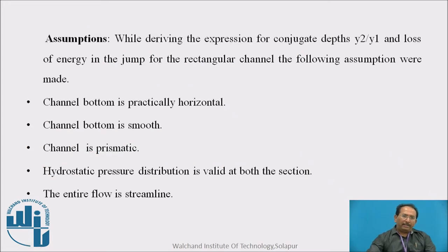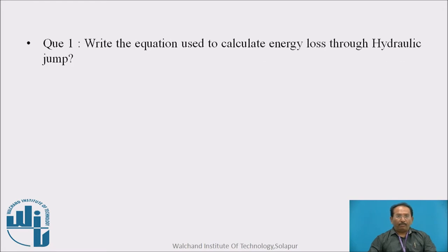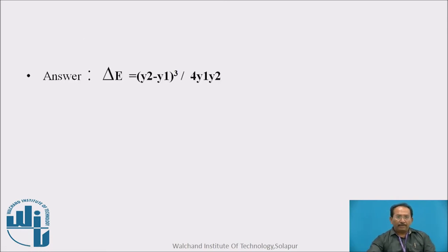For deriving this equation, following are the assumptions. The channel bottom is practically horizontal. It is the channel bottom must be smooth. Channel bottom is prismatic that is no scouring, no silting. And hydrostatic pressure distribution is valid. And the entire flow is streamlined, that is in the straight line. This is the question for you: write the equation used to calculate energy loss through hydraulic jump. This is the equation: delta E is equal to y2 minus y1 bracket cube upon 4 y1 y2.